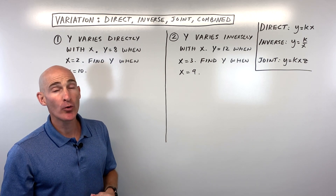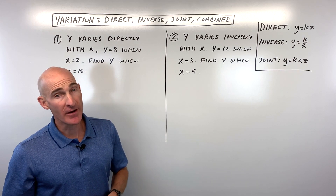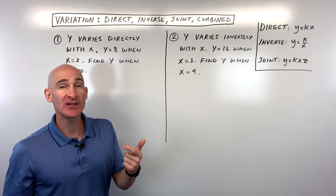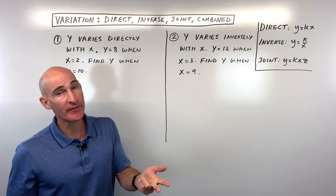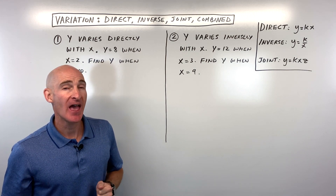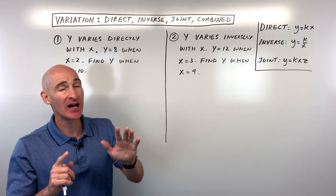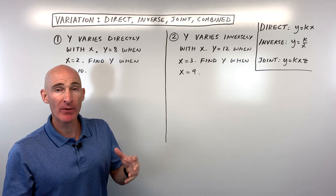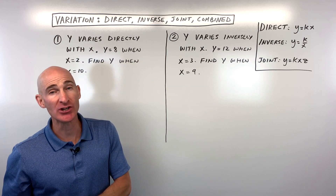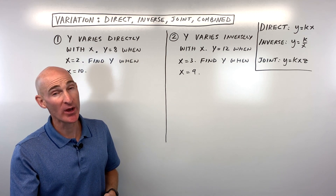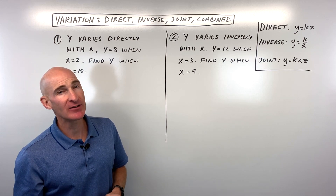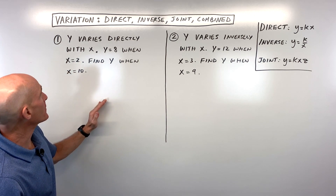In this video you're going to learn how to work with variation equations. We're going to talk about direct variation, inverse variation, joint variation, as well as combined variation, and we're going to do this in six examples. We're going to talk about how to work with tables, how to write equations, and how to use those equations to find particular values.